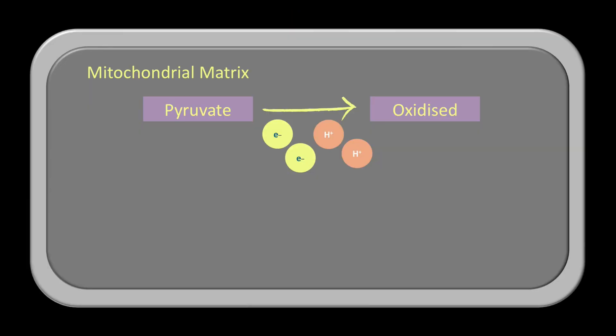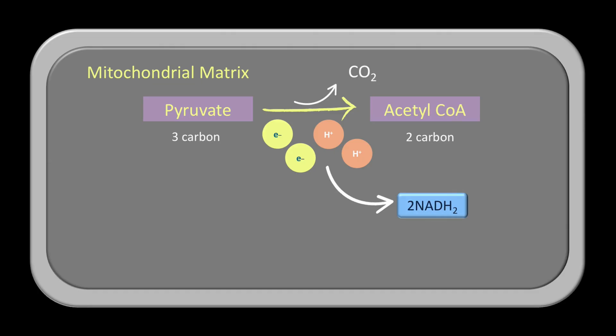Pyruvate is oxidized as it transfers electrons and hydrogen to NAD+, our favorite electron carrier. In this process, each molecule of three-carbon pyruvate breaks down to a molecule of two-carbon acetyl-CoA and a molecule of carbon dioxide. So from two molecules of pyruvate we get two molecules of acetyl-CoA and two molecules of carbon dioxide.